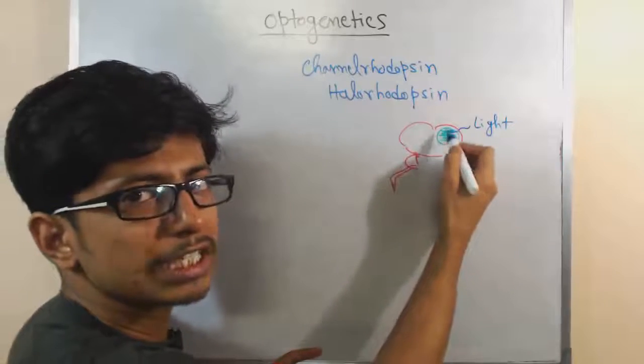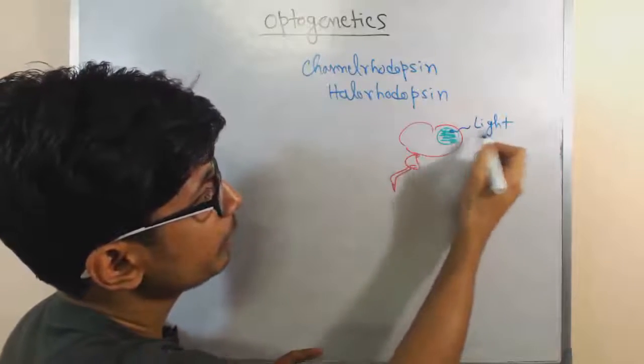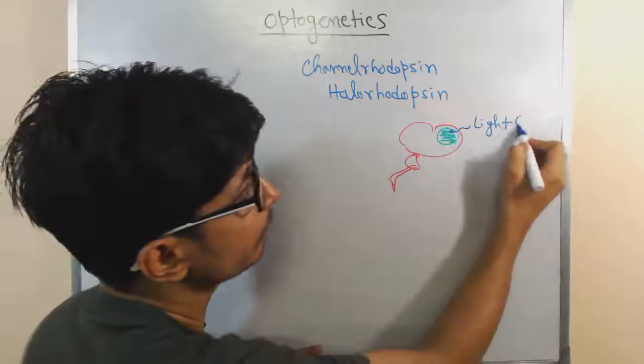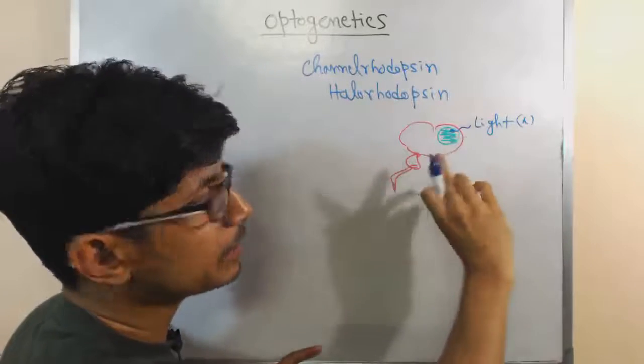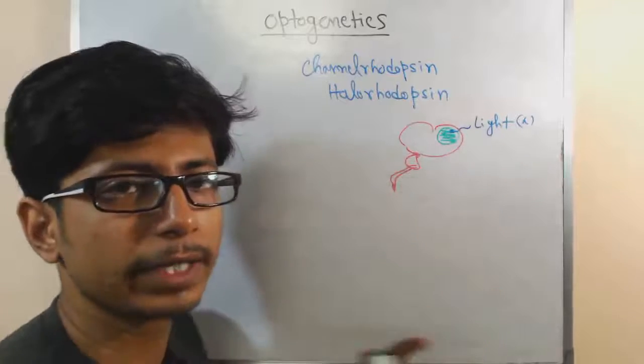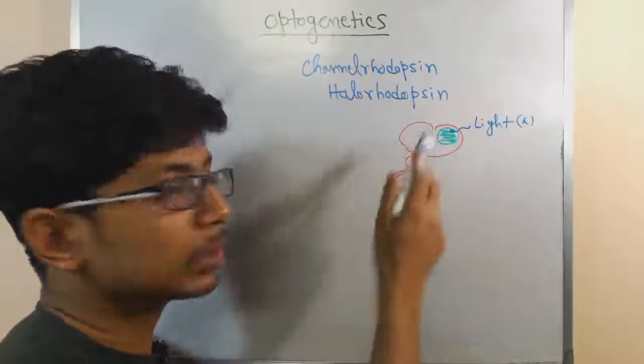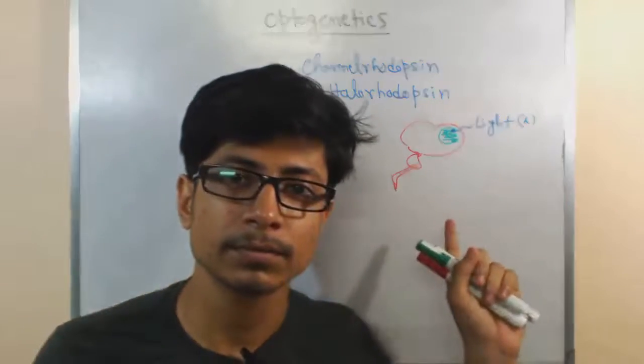We genetically modified those cells out there. Now we apply some light, a particular wavelength there, and after this we just shift this wavelength with different kinds of light and we can control the movement of the rat.